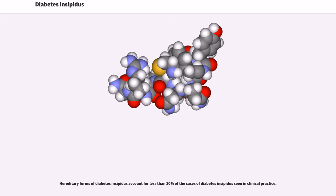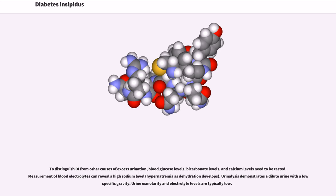Hereditary forms of diabetes insipidus account for less than 10% of the cases of diabetes insipidus seen in clinical practice. To distinguish DI from other causes of excess urination, blood glucose levels, bicarbonate levels, and calcium levels need to be tested. Measurement of blood electrolytes can reveal a high sodium level. Urinalysis demonstrates a dilute urine with a low specific gravity. Urine osmolarity and electrolyte levels are typically low.